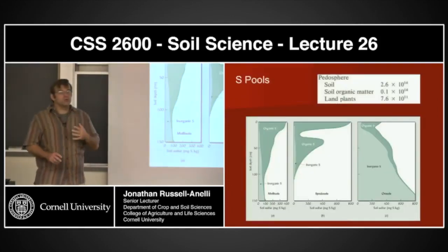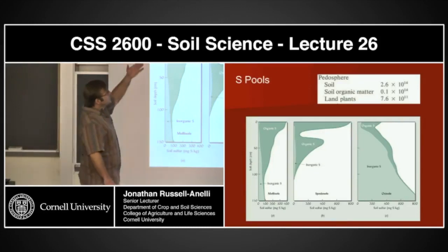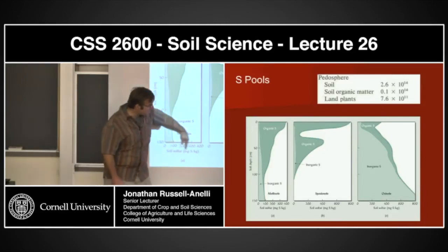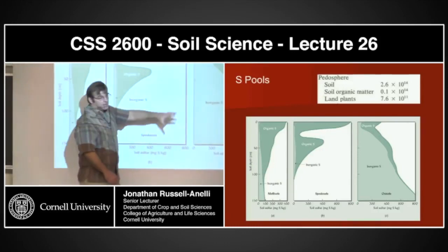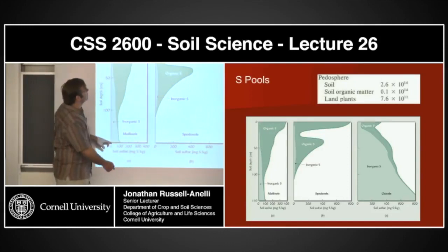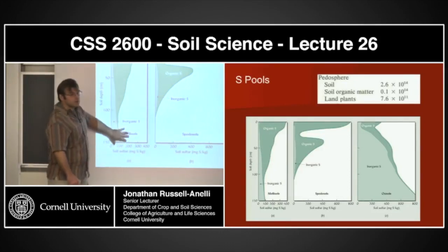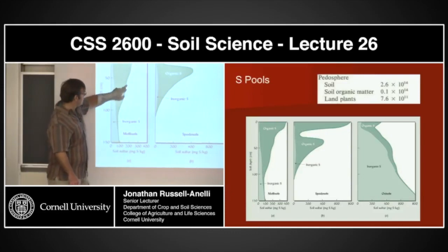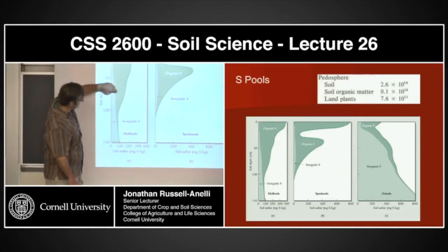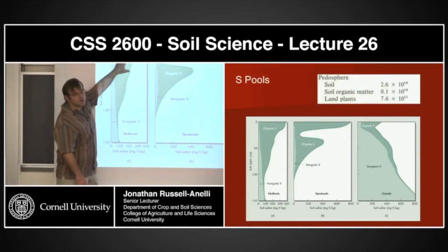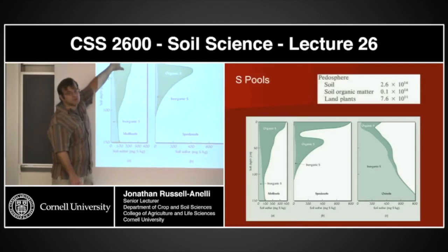Where are those pools when we talk about the biosphere? Soil, soil organic matter, and land plants. I have three different soils here — you're looking at the soil depth and concentrations within each one in the profile. With Mollisols, there's high organic matter at the surfaces, so high levels of organic sulfur at the surfaces. As you get into depth, you start seeing an increase in inorganic sulfur. The predominant form of sulfur in these Mollisol soils is in organic matter, and the predominant area is at the surfaces because that's where the organic matter is.